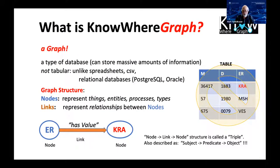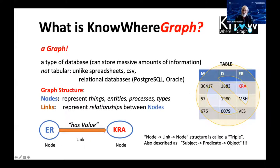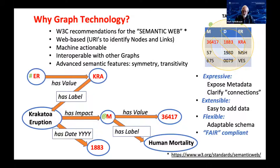First, I'd like to provide a little technical background about our Nowhere Graph. The Nowhere Graph is a graph — a type of database, but not structured like your more conventional table, like in a spreadsheet, CSV, or even relational databases. It has a graph structure consisting of nodes and links. A node linked to another node is called a triple or a statement, also referred to as a subject-predicate-object. The Nowhere Graph currently consists of over 12 billion of those triples.